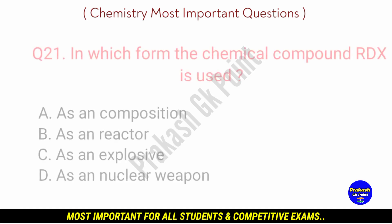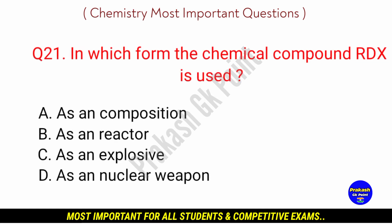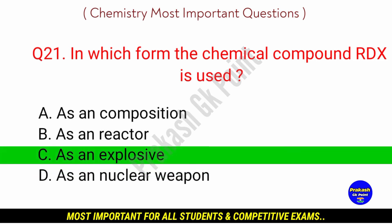Next question: in which form is the chemical compound TNT used? Answer: option C, as an explosive.